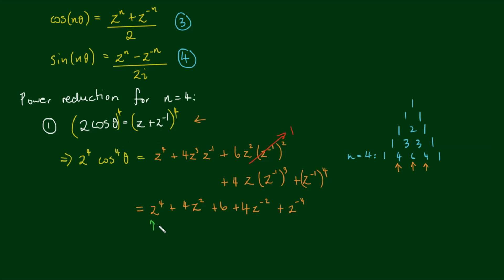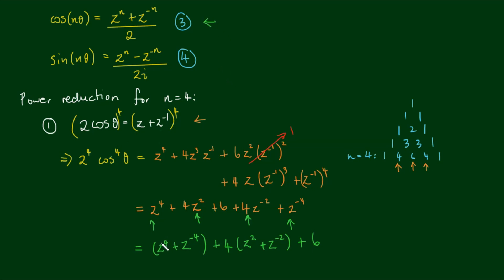Now I'm going to group terms: z to the 4th and z to the negative 4 together, plus 4 outside of z squared plus z to the negative 2, then plus 6. By equation 3, z to the 4th plus z to the negative 4 equals 2 cosine of 4 theta. Similarly, z squared plus z to the negative 2 equals 2 cosine of 2 theta. So copying down the 4 and plus 6, we have the expression ready to simplify.